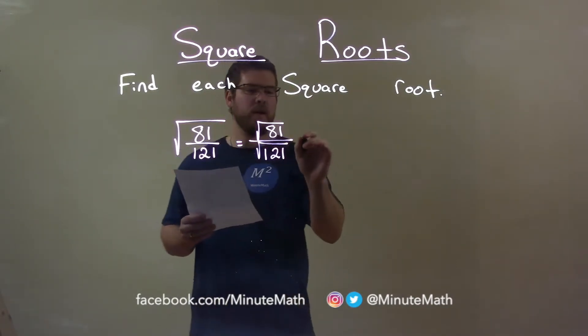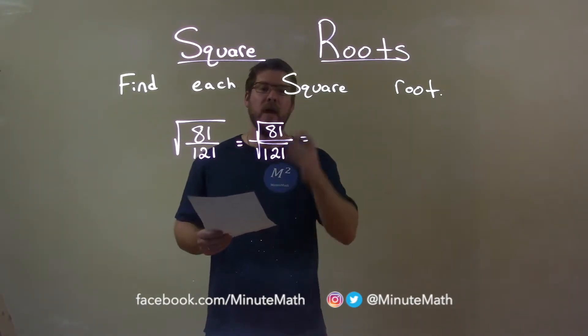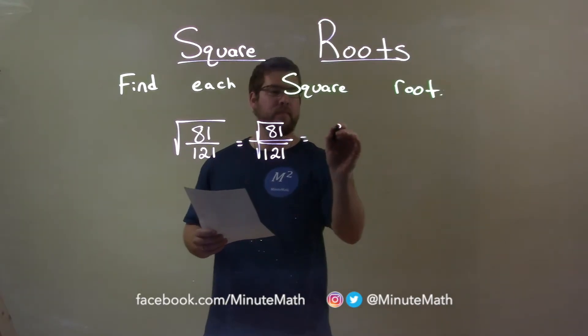The square root of 81, well, we ask ourselves what number times itself is 81. That number is 9, so the square root of 81 is 9.